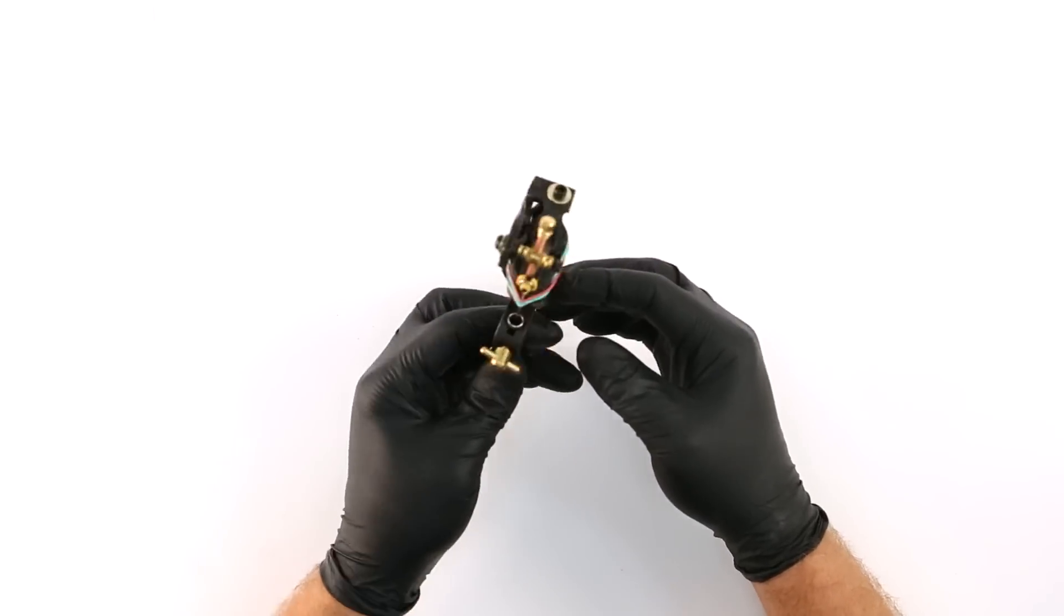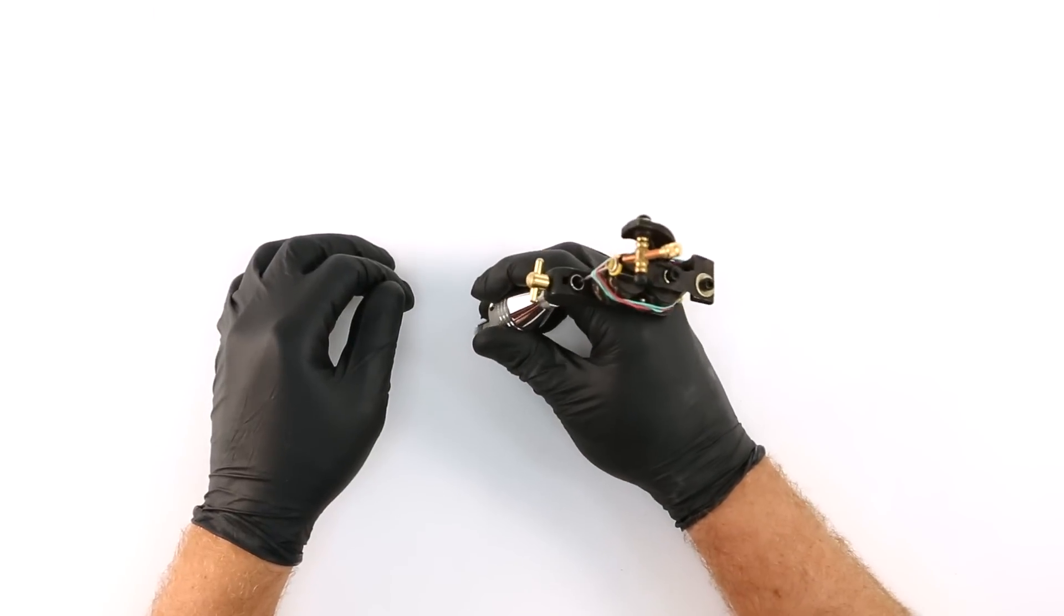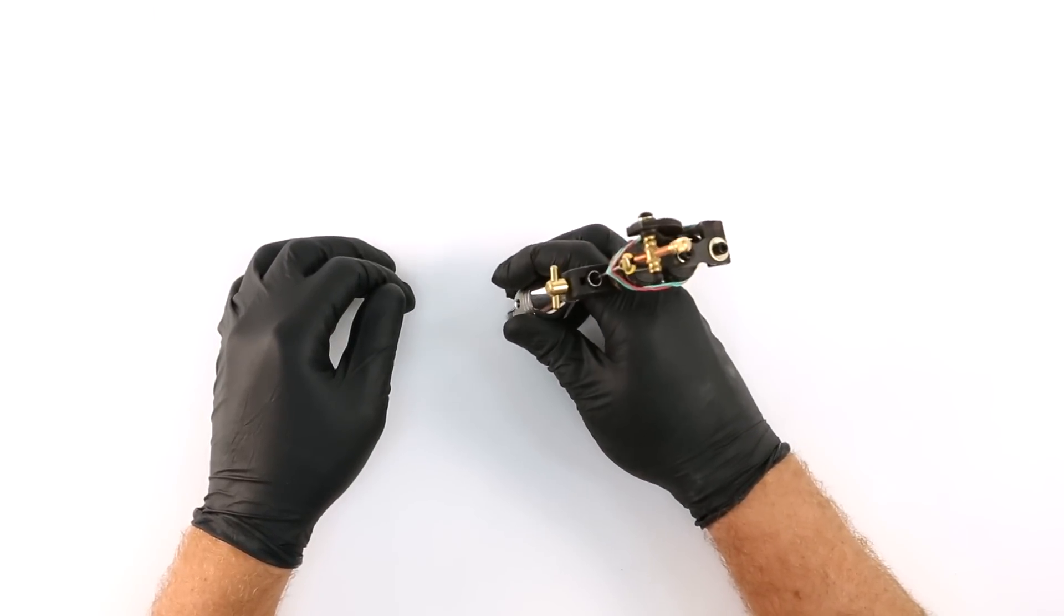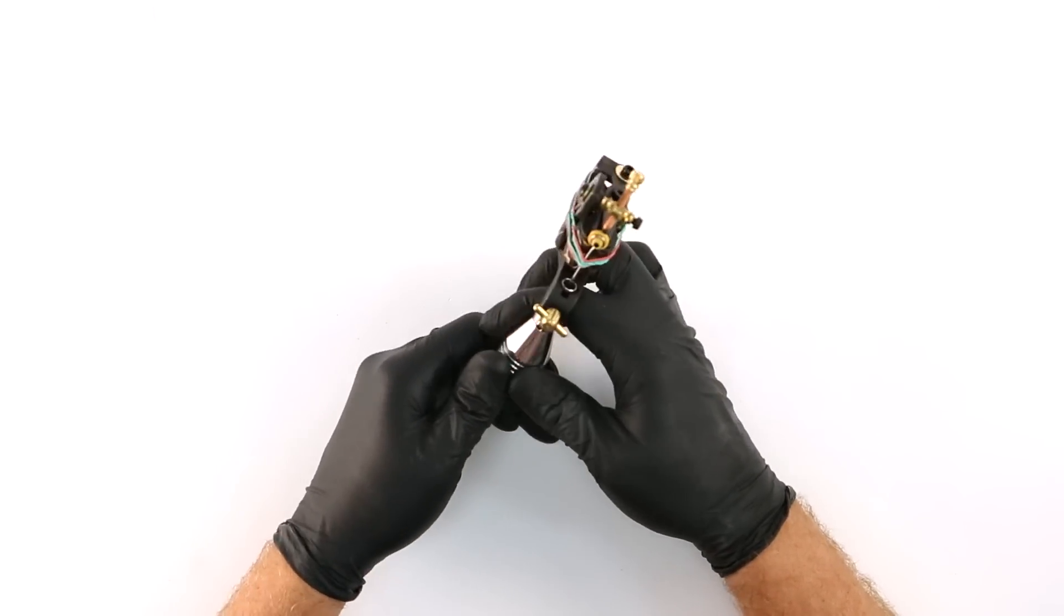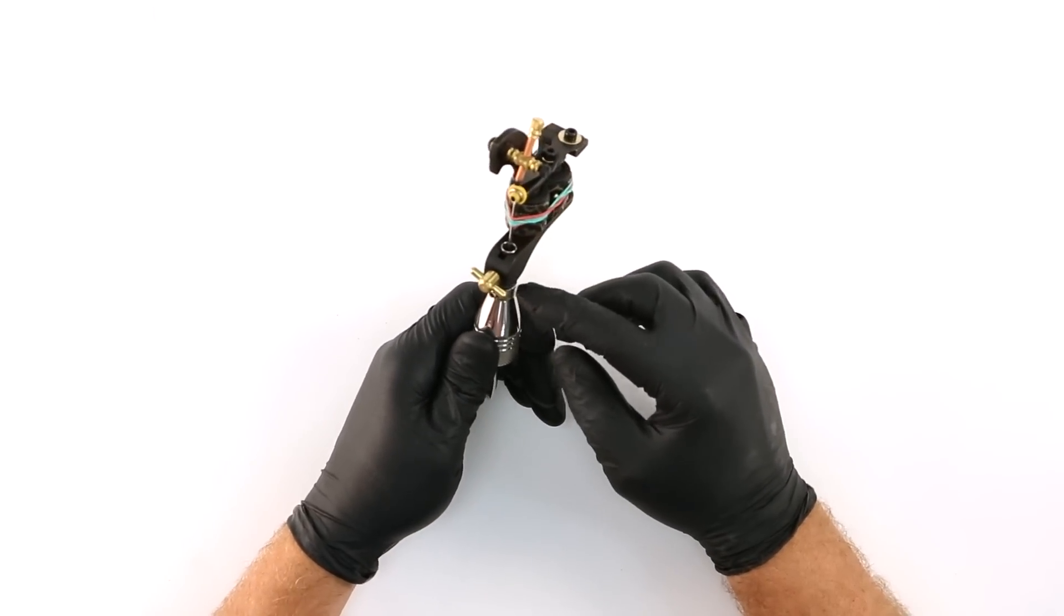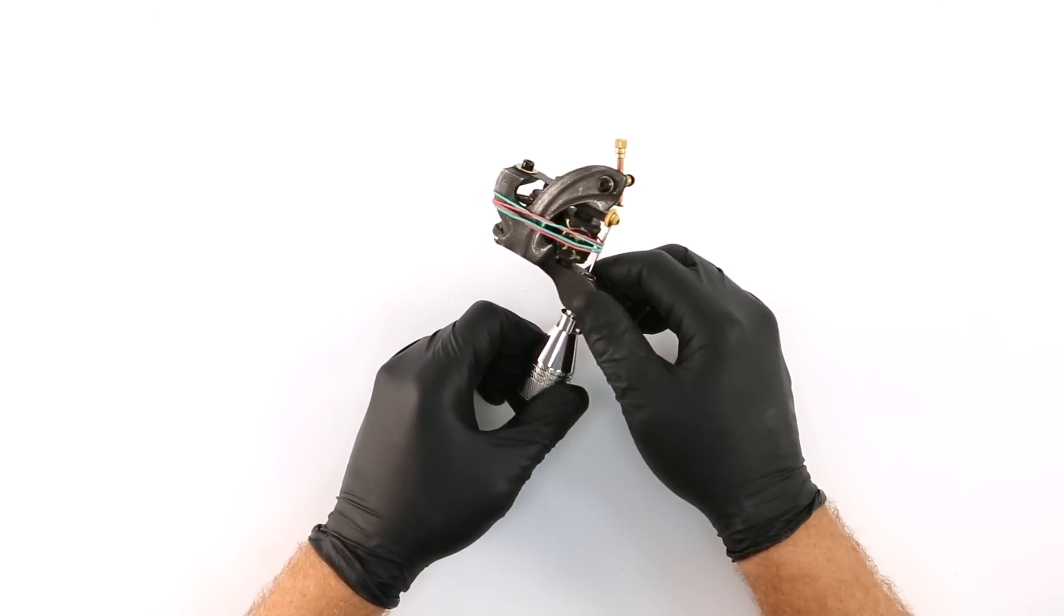One last tip is that if your vise screw or machine frame is interfering with your hand while working, you'll need to move the grip down away from the machine. The way to do this is to adjust the overall length of the tube by decreasing the amount of stem that's in the grip when you initially put your tube together.